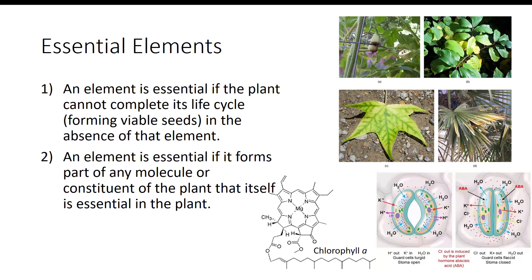According to Epstein, the two principal criteria by which an element can be judged essential to any plant are as follows. First, an element is essential if the plant cannot complete its life cycle, forming viable seeds, in the absence of that element. Second, an element is essential if it forms part of any molecule or constituent of the plant that itself is essential in the plant. For example, nitrogen is an integral part of proteins, and magnesium is in chlorophyll. Just because an element is in the plant does not mean it is essential, because plants indiscriminately take up a variety of materials and water.